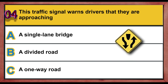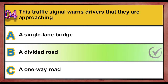Question 4. This traffic signal warns drivers that they are approaching: A. A single-lane bridge. B. A divided road. C. A one-way road. Correct answer is B: A divided road.